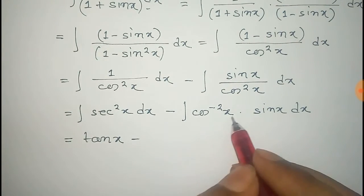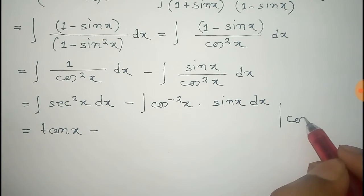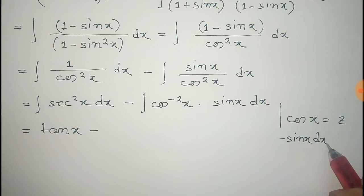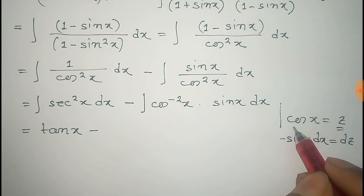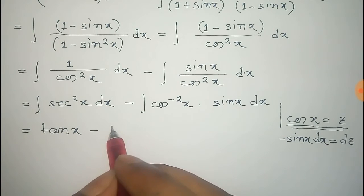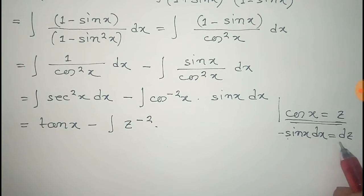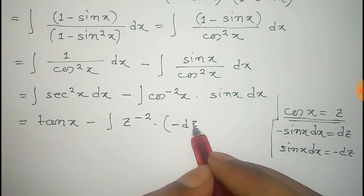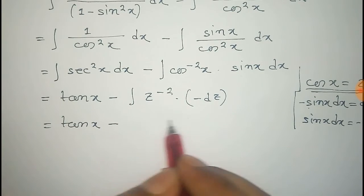For the second integral, we consider that cosine x equals z. Differentiating both sides, we get minus sin x dx equals dz, so sin x dx equals minus dz. We substitute cosine x with z, giving z to the power minus 2, and sin x dx becomes minus dz.